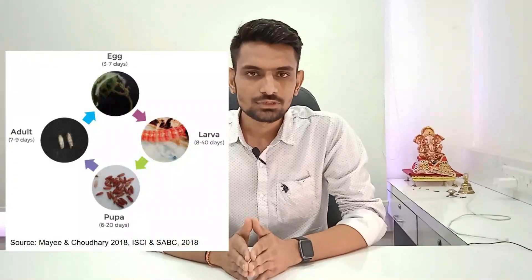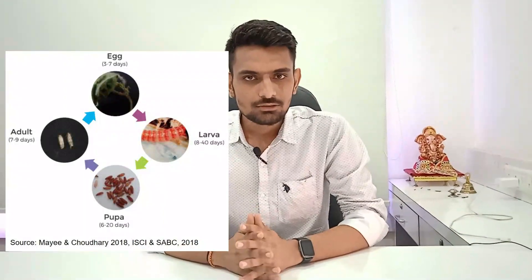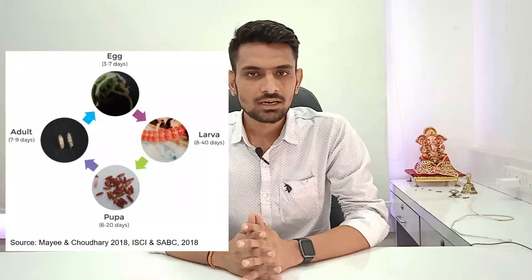As we talk about the life cycle, it is completed in four steps. First of all: egg, larva, pupa, and adult. This is the most important part of the gulabi sundi.